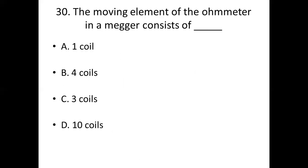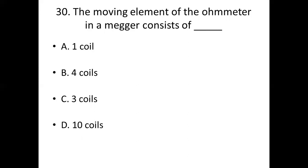30th bit. The moving elements of the Ohmmeter in a Megger consists of dash. Option A: one coil. Option B: four coils. Option C: three coils. Option D: ten coils. Answer: Option C, three coils.